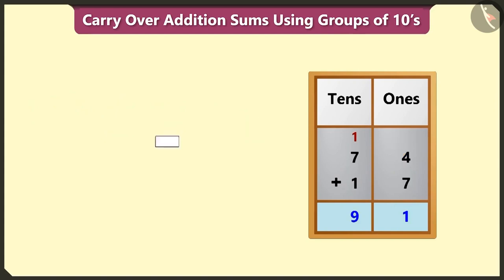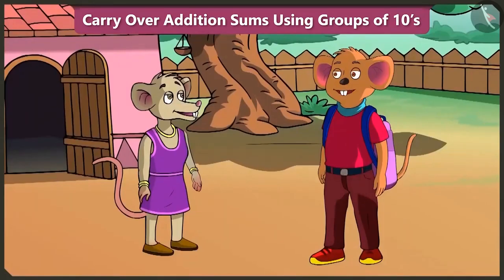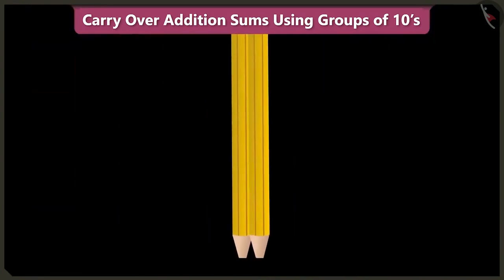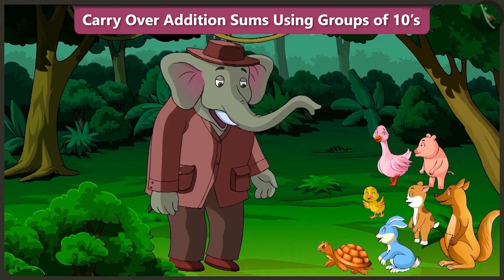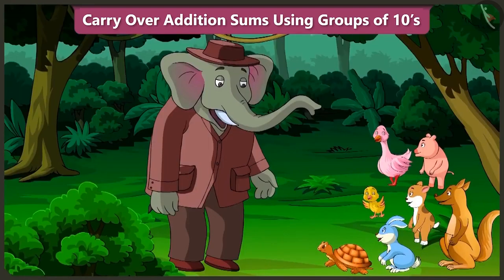Yes — while adding, we have to first add the numbers in the ones box, and then add the numbers in the tens box along with the carry over number. Children, I hope you were able to identify the abacus numbers and learn how to add 2-digit numbers using the carry over method. In the next video, we will learn some interesting facts about adding 2-digit numbers with the carry over method.